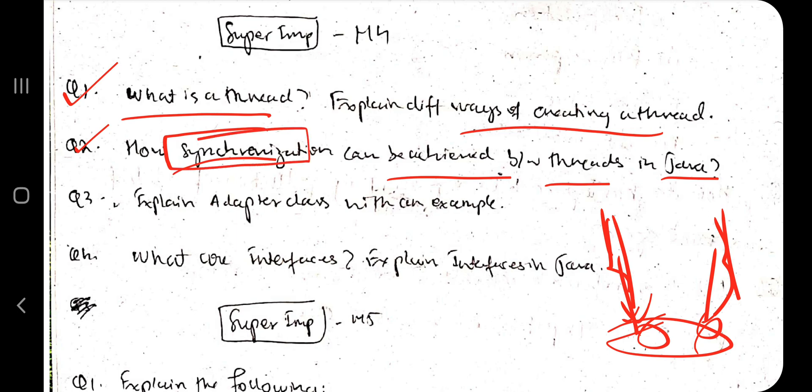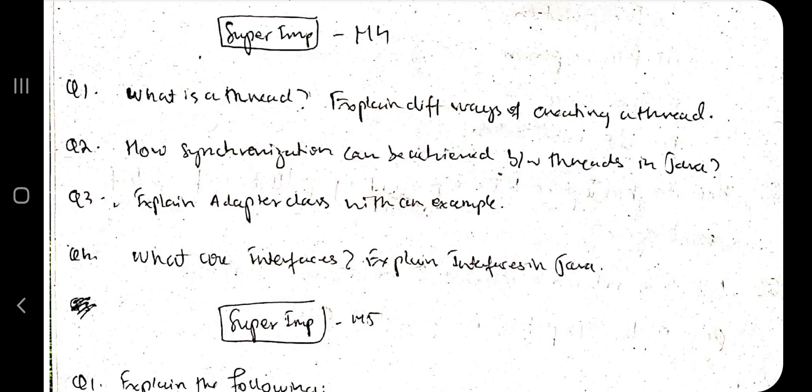Next we have adapter class in Java. What is an adapter class? Why is it needed? What is its syntax? How do you implement it? What are the key features of it and what are its advantages and disadvantages? Where all can it be used? What is its scope? All these things should be mentioned in the third question which is: explain adapter class with an example.